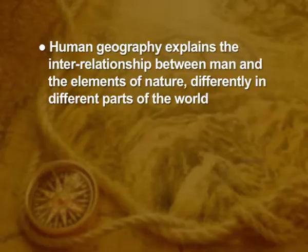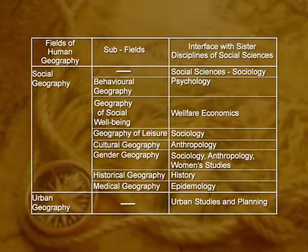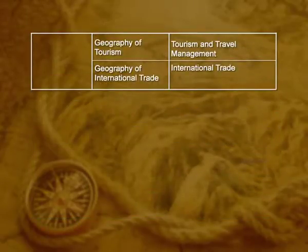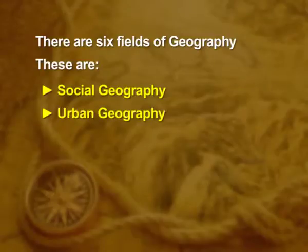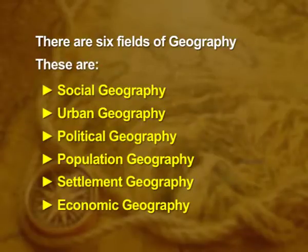Human geography explains the interrelationship between man and the elements of nature differently in different parts of the world. The given table reveals the expanding realm of human geography — it talks about the fields and sub-fields of geography. There are six fields: social geography, urban geography, political geography, population geography, settlement geography and economic geography. They are further divided into various sub-fields, which we will also discuss.